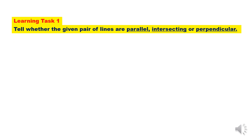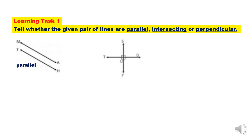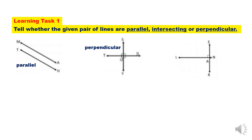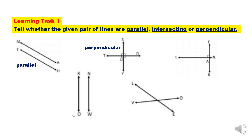For Learning Task 1, tell whether the given pair of lines are parallel, intersecting, or perpendicular. Number 1, number 2, number 3, number 4, and number 5 — try to answer these.